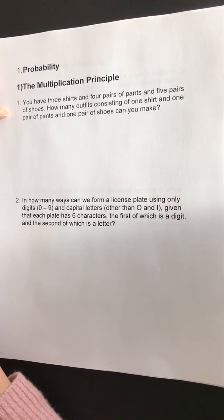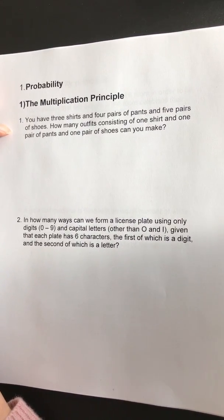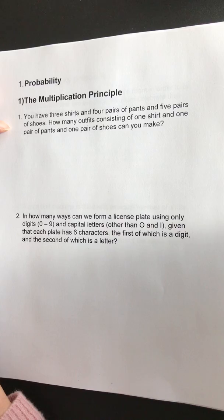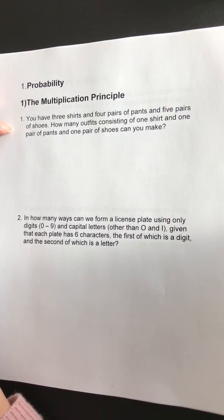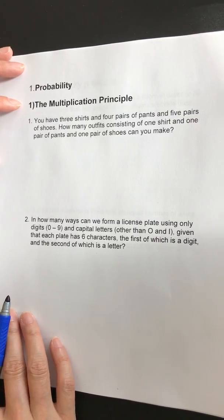First example, you have three shirts and four pairs of pants and five pairs of shoes. How many outfits consisting of one shirt and one pair of pants and one pair of shoes can you make? Okay, here we can make a picture.